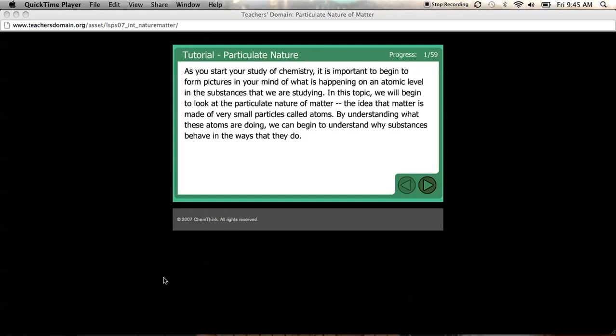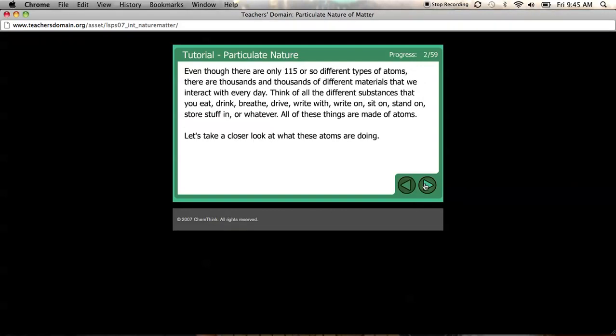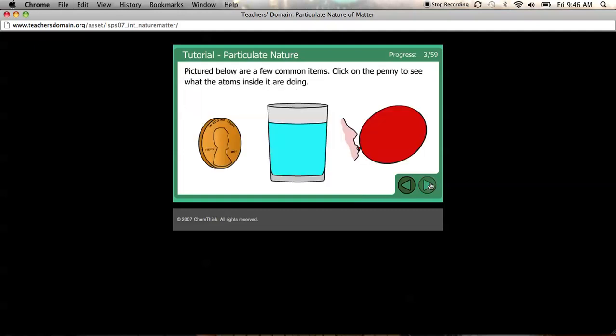So by understanding what the atoms are doing, we can understand why matter, substances, act and look the way that they do. Okay, so there's only about 115 or so different types of atoms. They're all arranged on the periodic table, the different elements. There's thousands and thousands of different materials that you interact with every day. So like you, what you're sitting on right now, your computer, everything you eat, drink, breathe, all that stuff is made of atoms. So we're going to take a closer look at what atoms are doing.